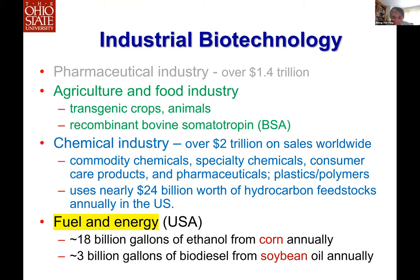For fuel and energy, the two largest biofuels today are ethanol, currently primarily produced from corn in the US at about 18 billion gallons annually, and biodiesel, primarily produced from vegetable oil including soybean oil and some animal fat, at about 3 billion gallons annually in the US. The current production really uses food crops, and that has caused concern about food versus fuel — fuel taking away food in countries where people are still hungry.